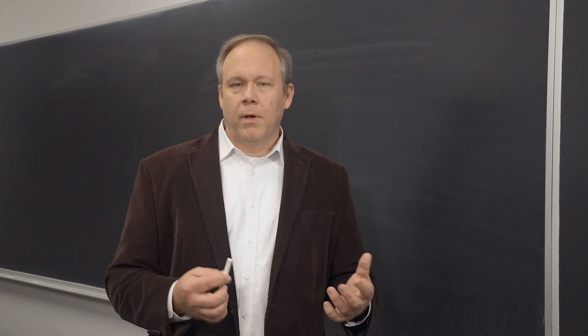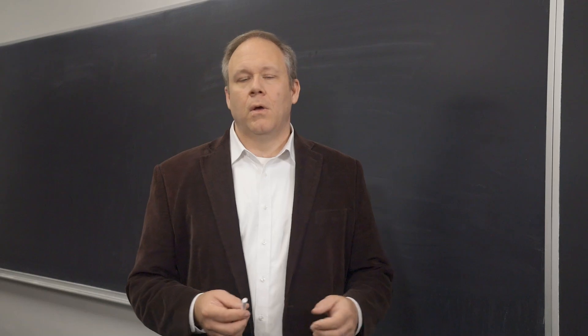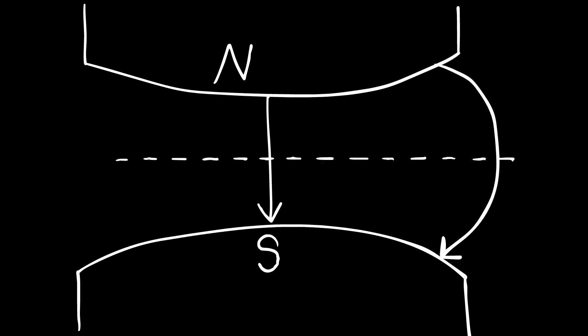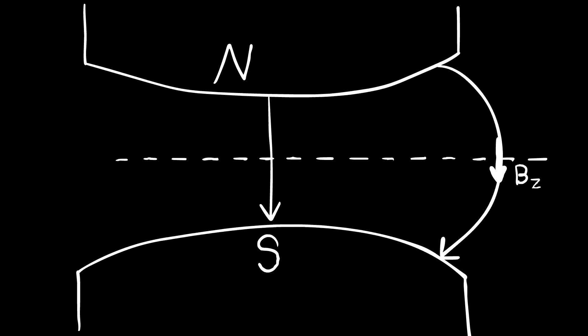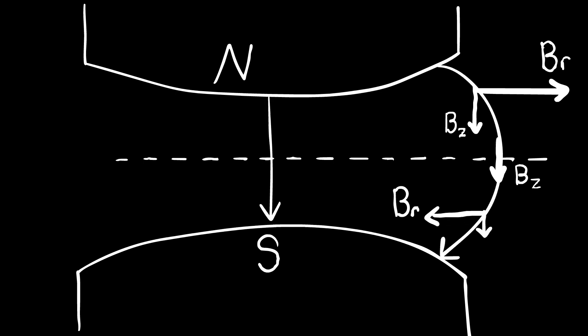To generate this in the lab, we design and manufacture a set of pole tips which have a slight taper on them. That's the north pole and the south pole. Right down the center the field is perfectly uniform and vertical, but out at the edge the field bulges outward. In the midplane the field is perfectly vertical. Above the midplane there is a radial component outward and a vertical component downward. Below the midplane we have a radial component inward and still the vertical component downward. The closer we get to the midplane, the smaller the radial component gets.